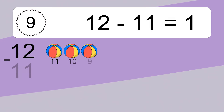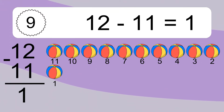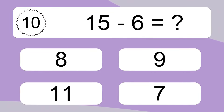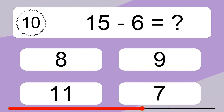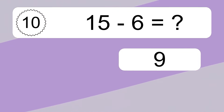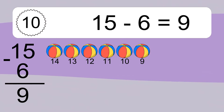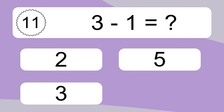12 minus 11 equals 1. Let's count it: 11, 10, 9, 8, 7, 6, 5, 4, 3, 2, 1. 15 minus 6 equals what? 15 minus 6 equals 9. Let's count it: 14, 13, 12, 11, 10, 9. 3 minus 1 equals what?